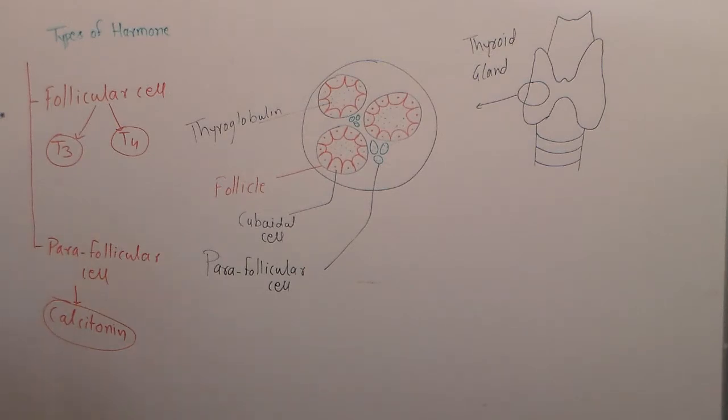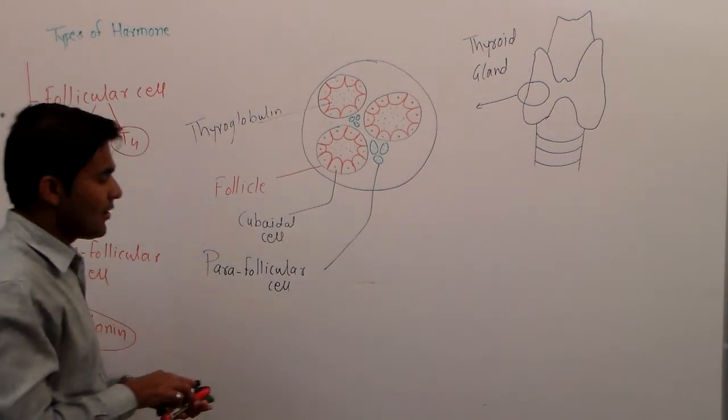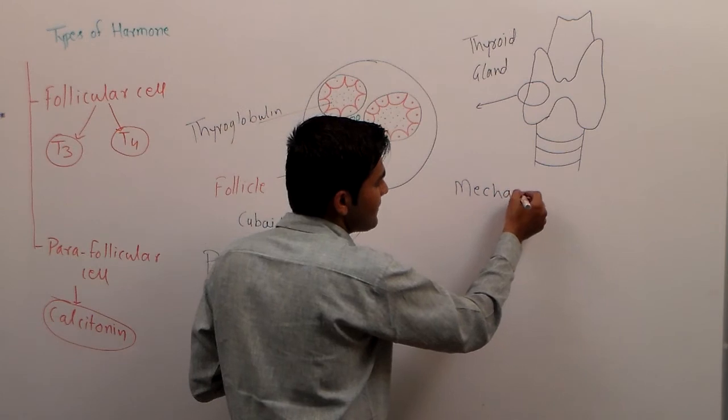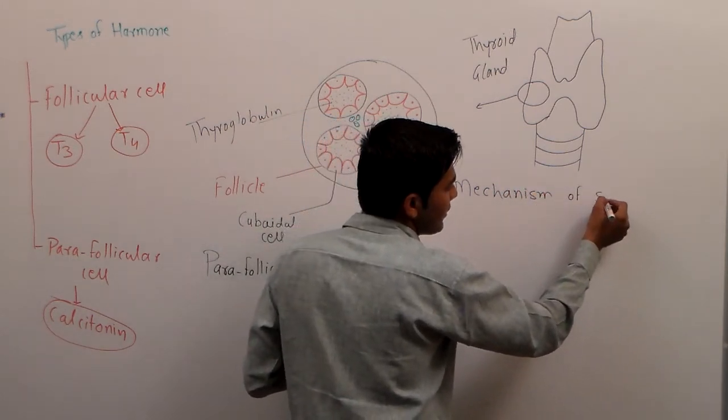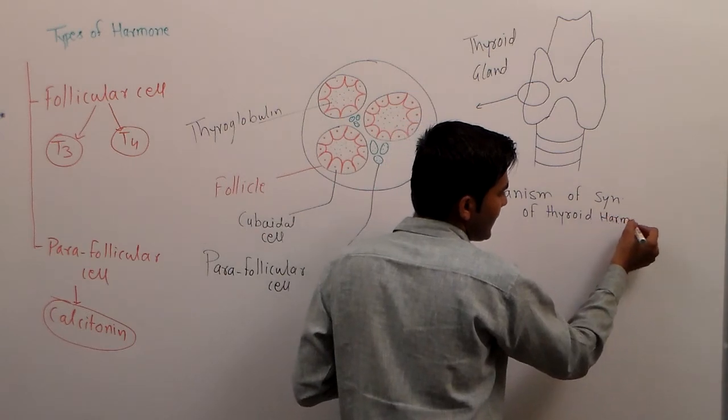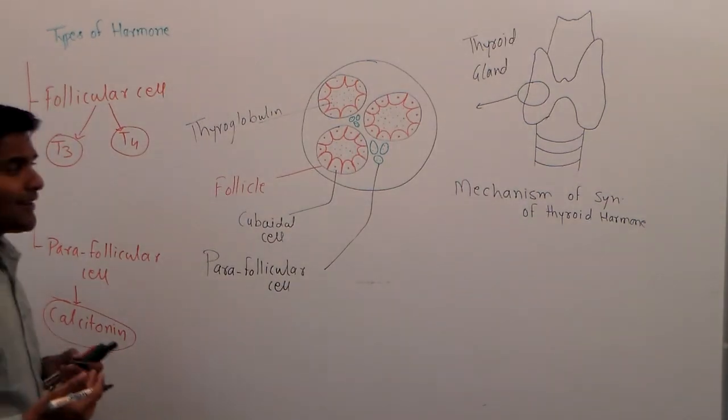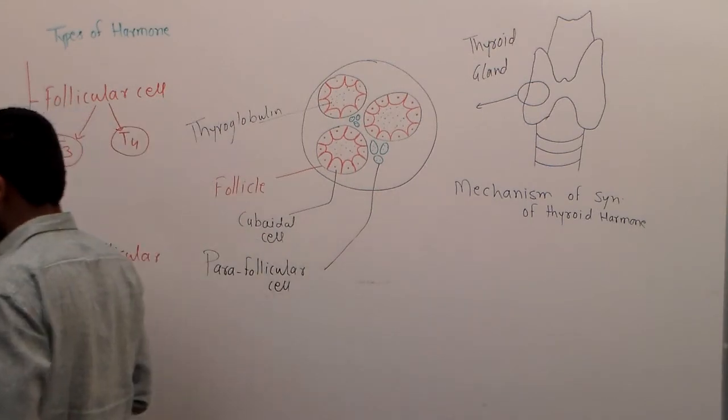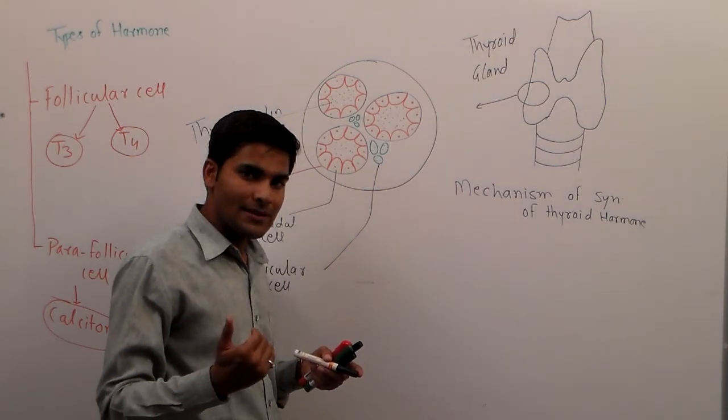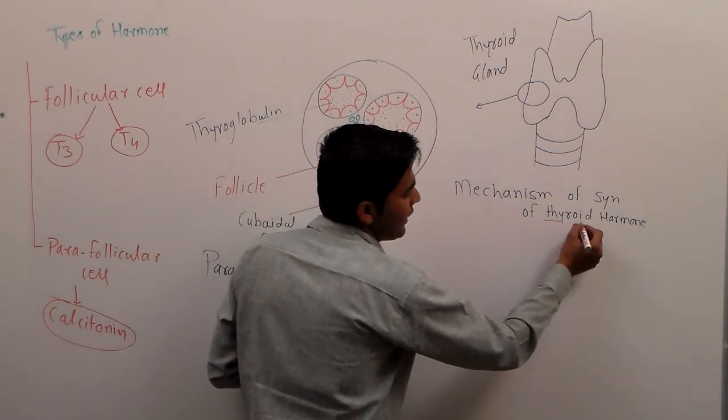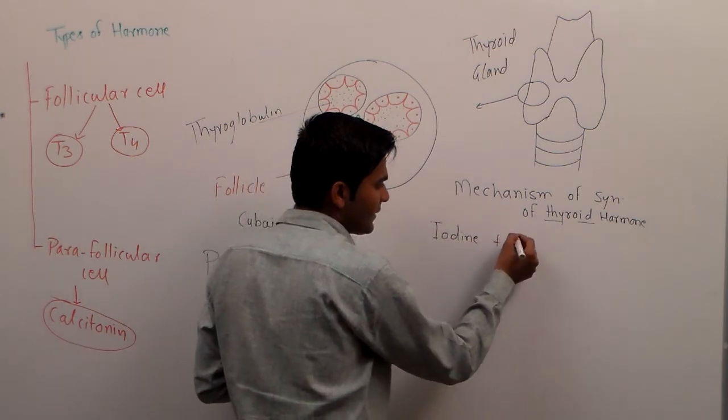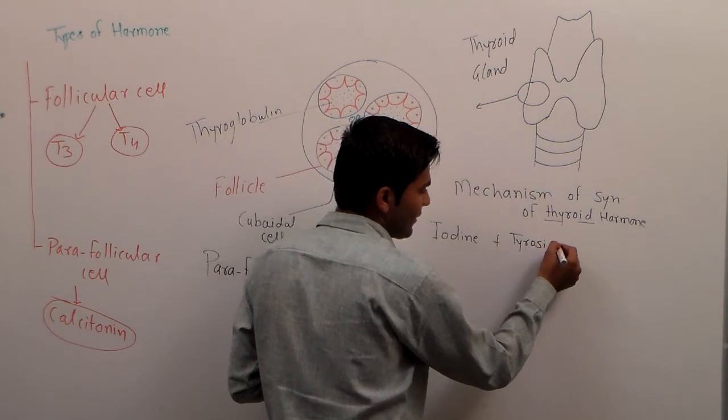Apart from the types of hormones, now we are moving to mechanism of synthesis of thyroid hormone. My dear friends, thyroid hormone is very important for us. These thyroid hormones are synthesized with the help of tyrosine, that is the amino acid, and iodide. Thyroid hormone is made up of iodine plus tyrosine amino acid.